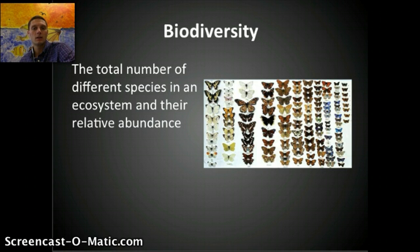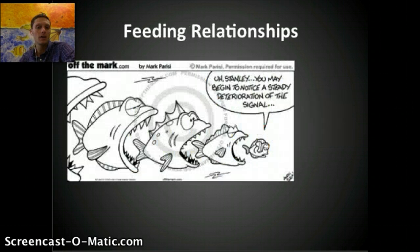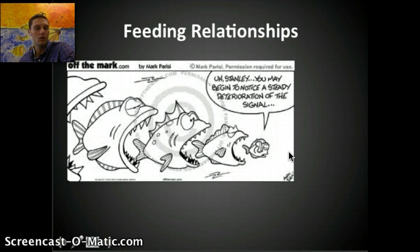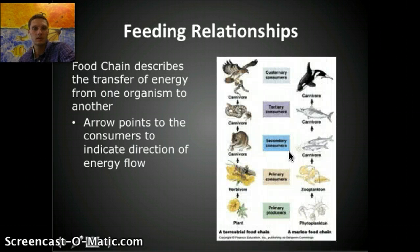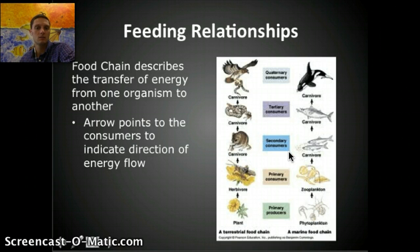One of the main ways to examine how organisms interact with each other is by looking at what eats what — we call these feeding relationships. A food chain describes the transfer of energy from one organism to another. A food chain is a basic linear system to show this transfer of energy, and there can be multiple different levels within a food chain.